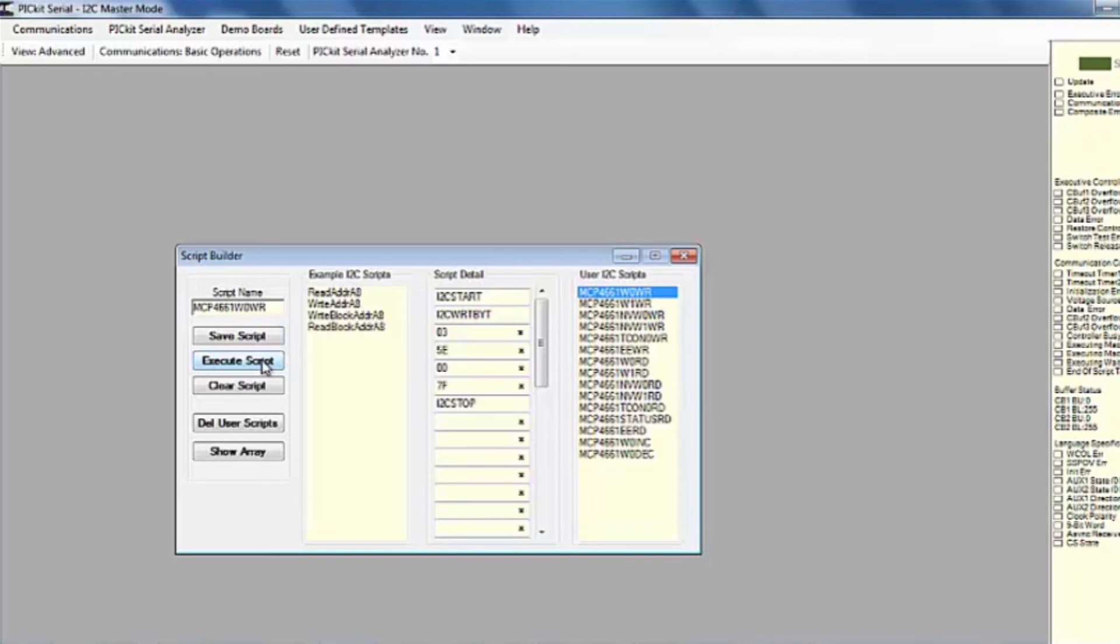The wiper voltage will now be VDD over 2. Select the MCP4661WR script in the user I2CM script column. Click on the execute script button. This executes the script shown in the script detail column.